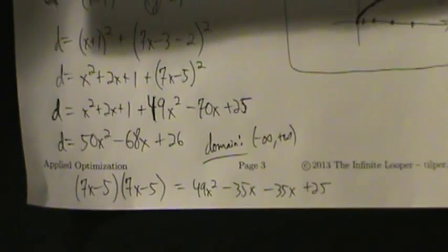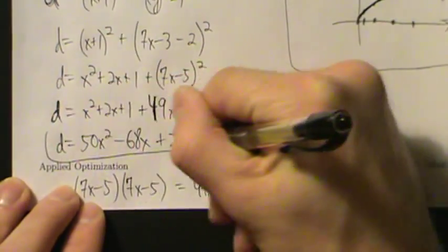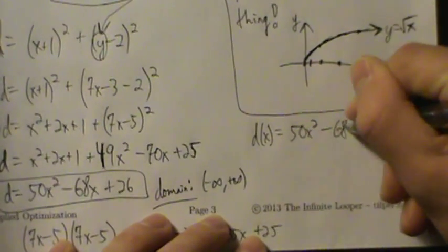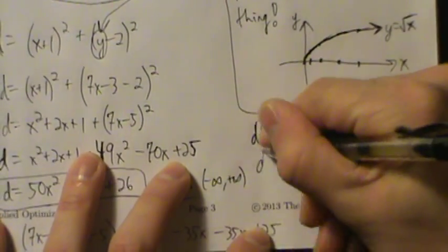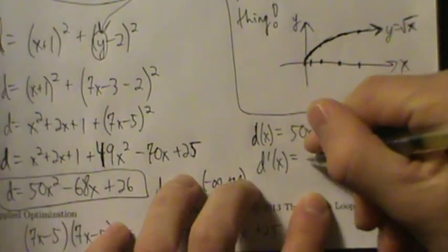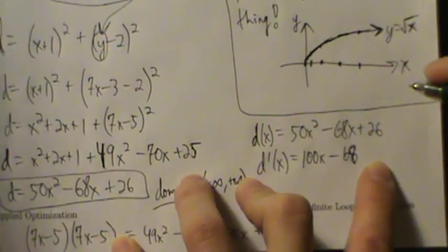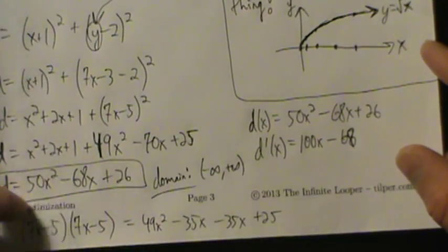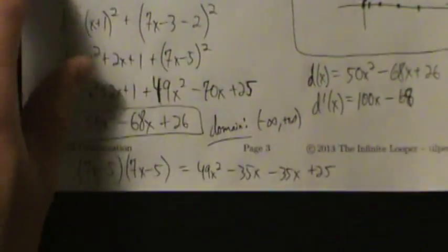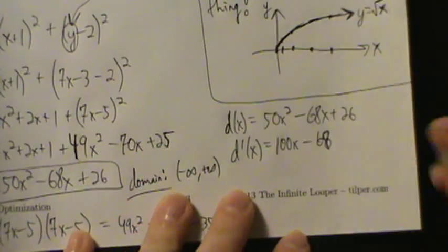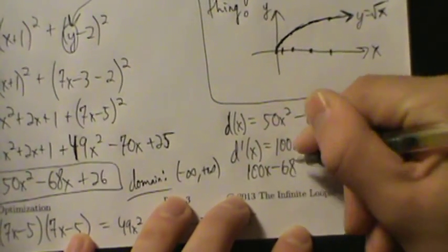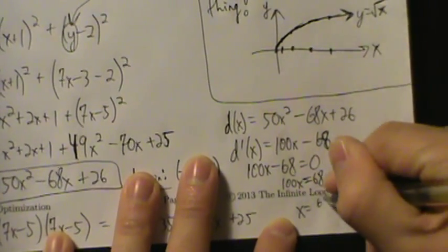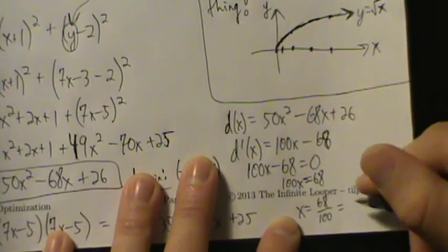Now step 5: use calculus techniques to find the desired quantity. So d of x equals 50x squared minus 68x plus 26. Taking the derivative: d prime of x equals 100x minus 68. Setting this equal to zero: 100x equals 68, so x equals 68 over 100, which simplifies to 34 over 50, which is 17 over 25.